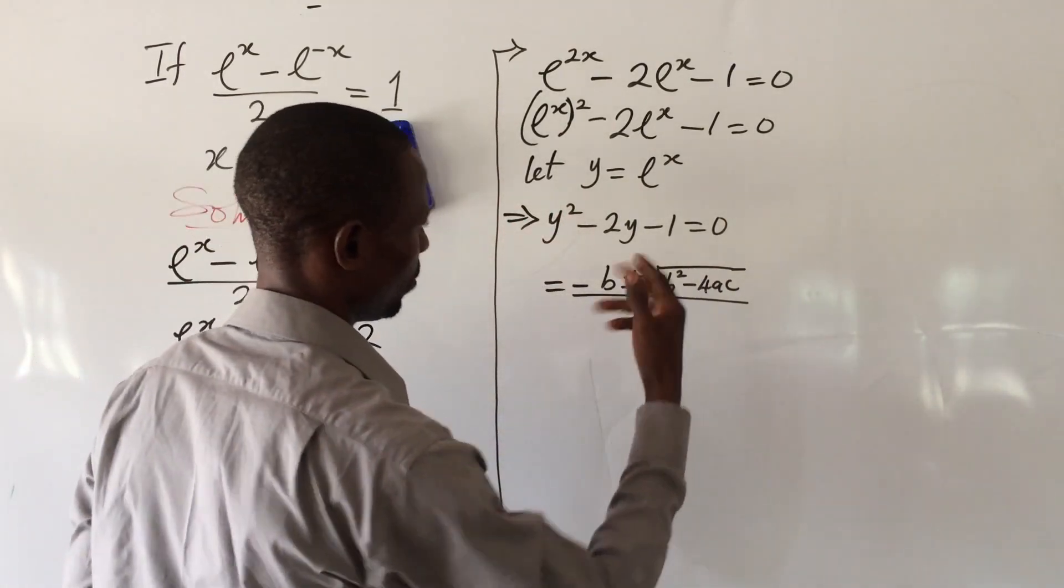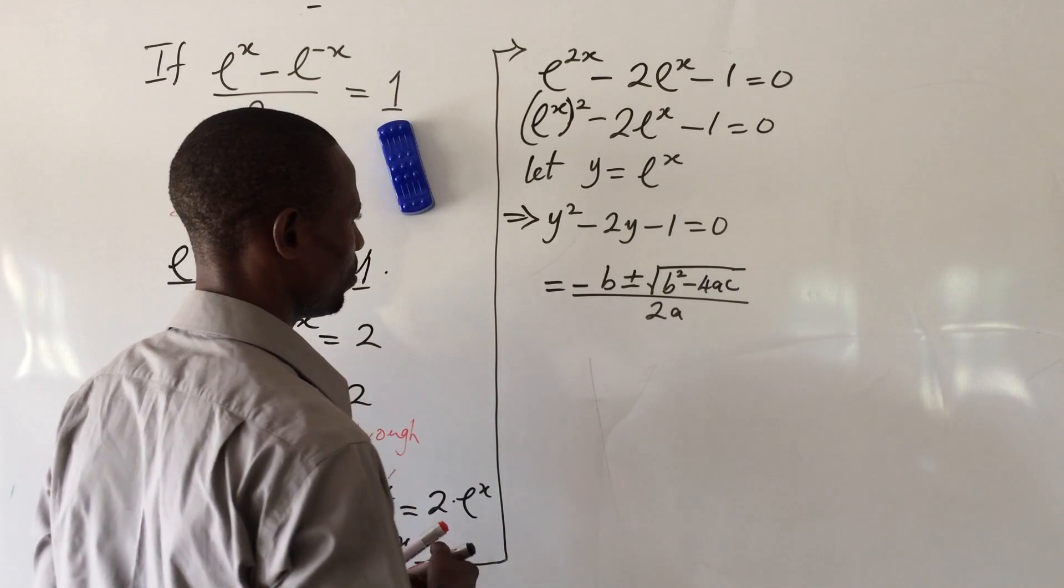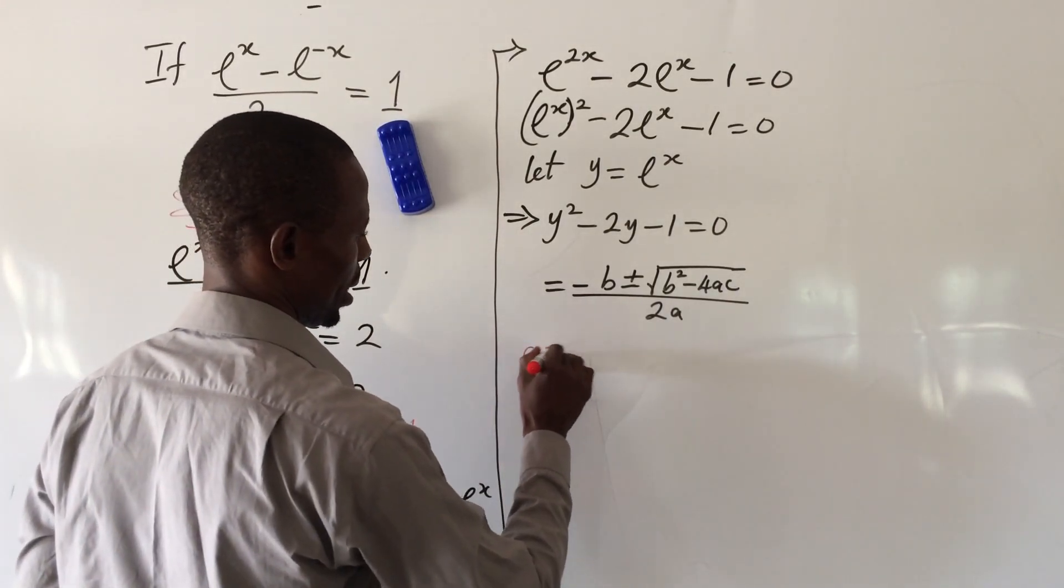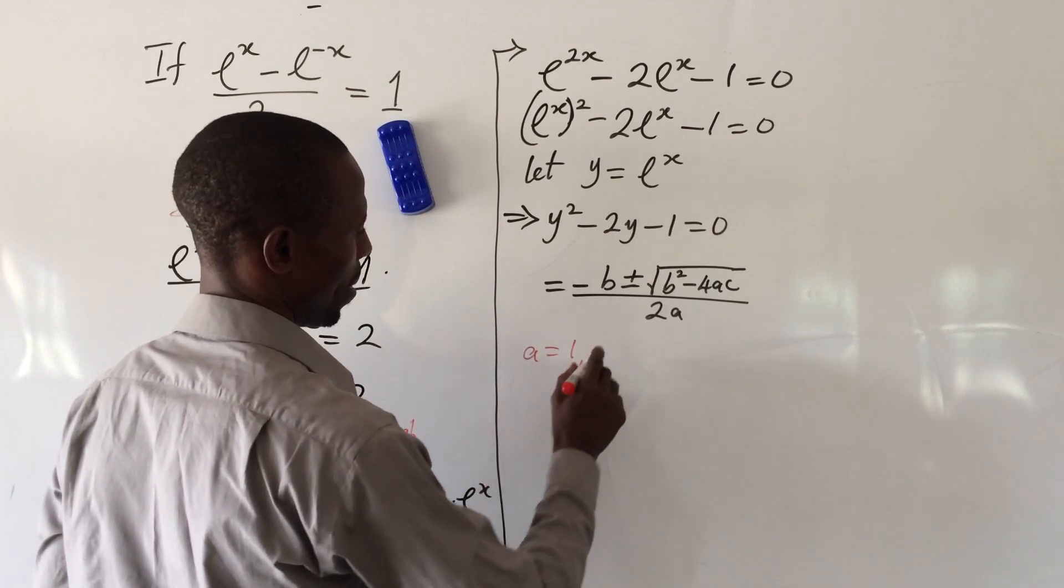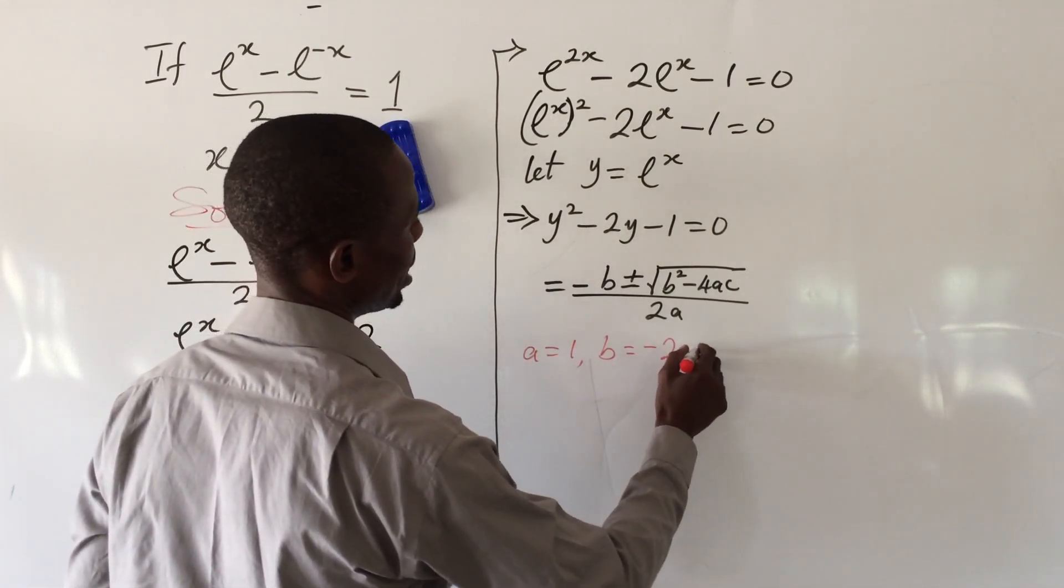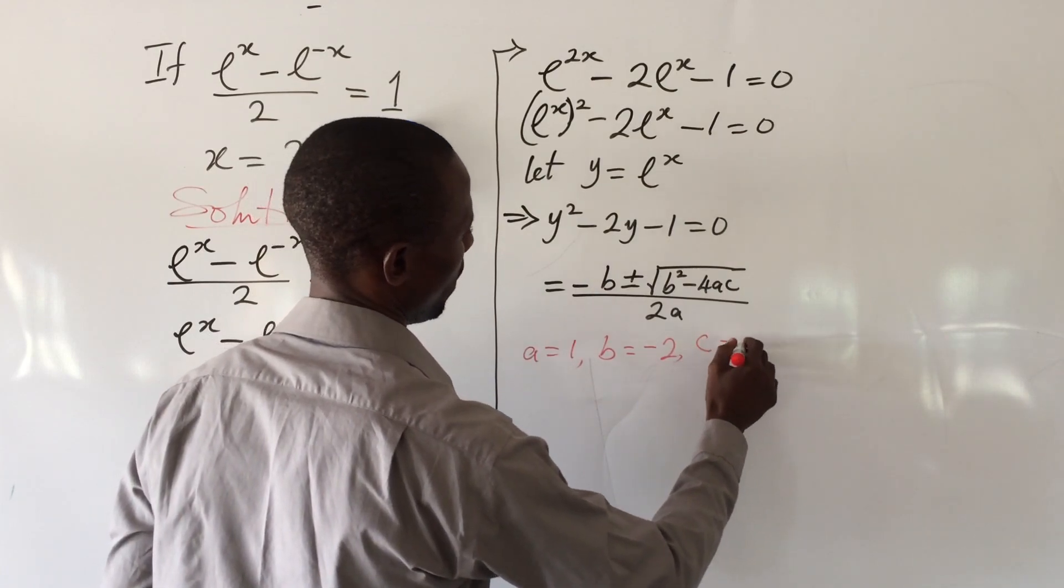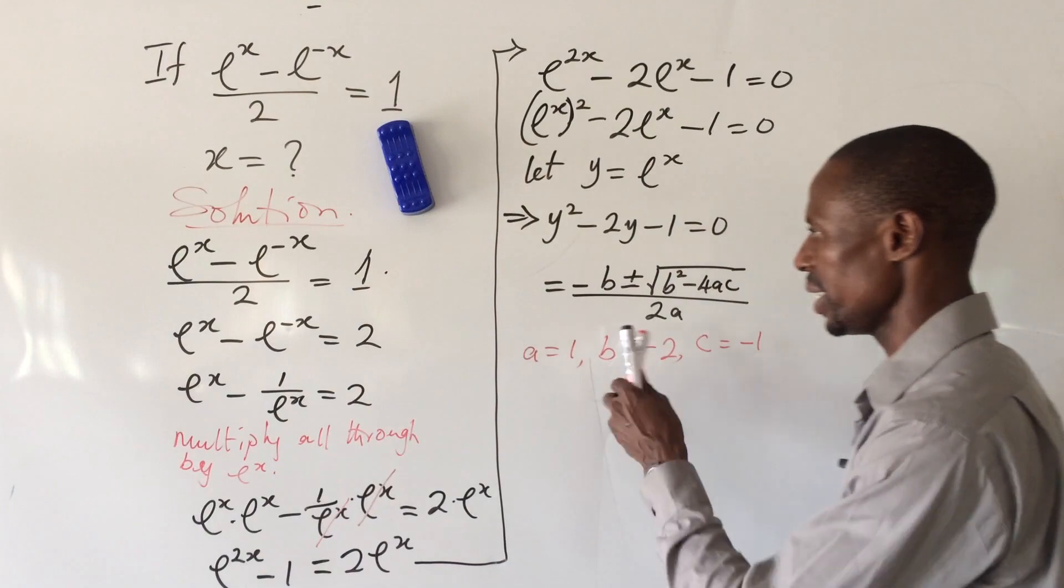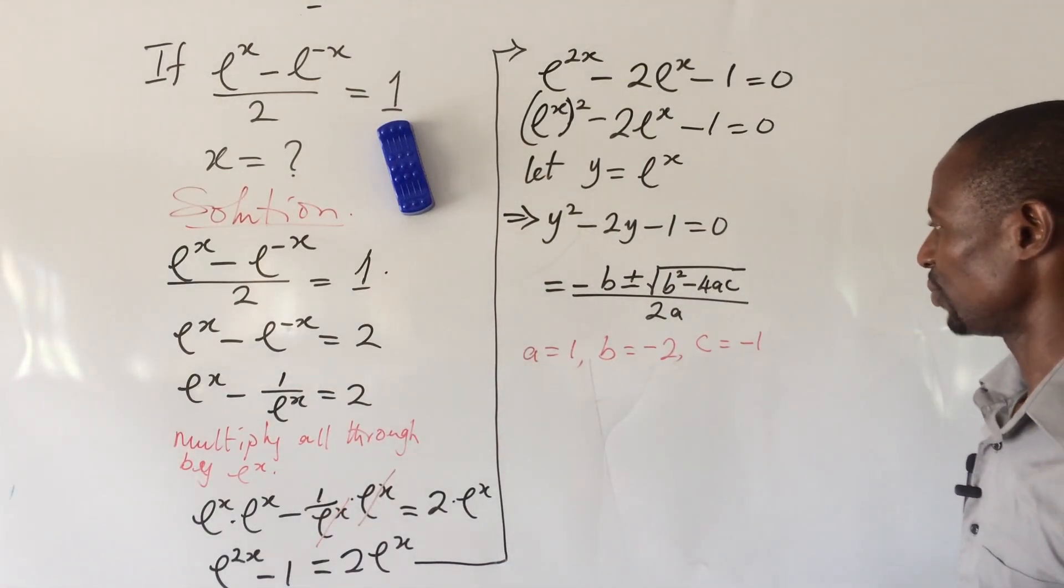Let's go to our question. What are the values of a, b, and c? From the question, a equals positive 1, b equals minus 2, and c equals minus 1. Let's pull these values into this expression.